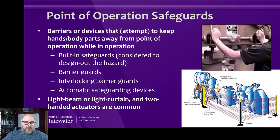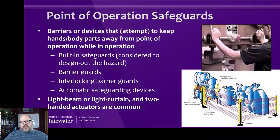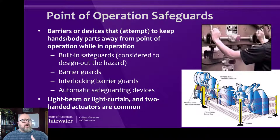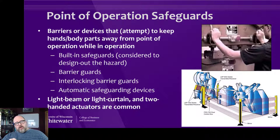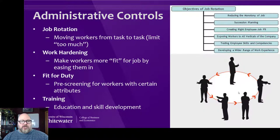There are other things like barrier guards, interlocking guards, and automatic safeguarding devices. With interlocking guards, there's a gate — either a typical fence gate or a door that opens and closes on a milling machine or CNC machine. An important point: some companies believe that when the interlocking guard is disengaged and the machine isn't supposed to run, that can act as lockout/tagout. That is not the case at all, because there is still energy going to the machine. We'll talk about lockout/tagout later.